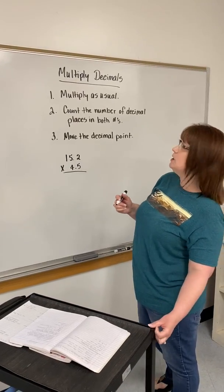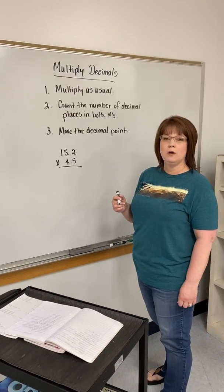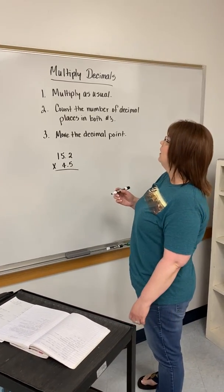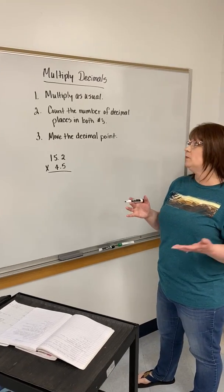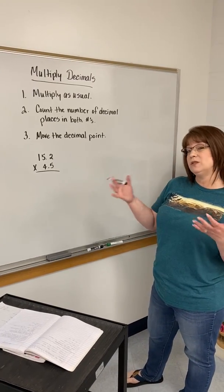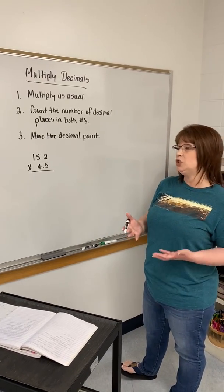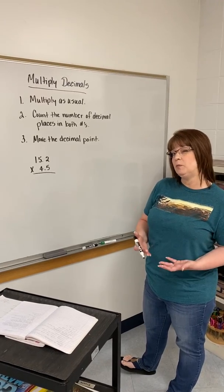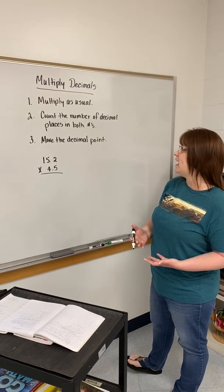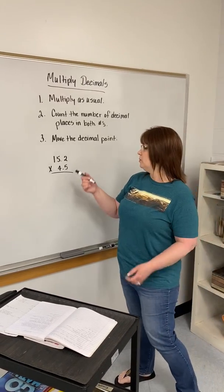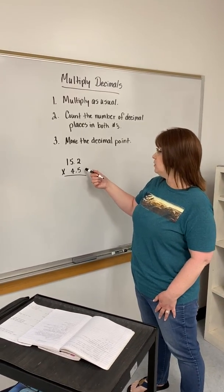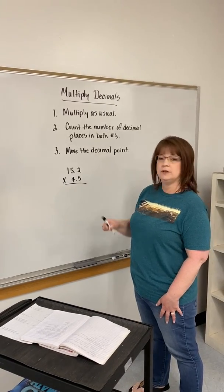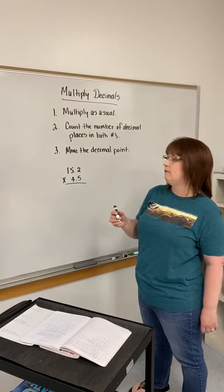Hey guys, we're going to do a quick review on how to multiply decimals. The nice thing about this is we just get to multiply as usual first, and then we worry about our decimal point after that. So let's go ahead and do that multiplication step first. So I have 15.2 times 4.5.